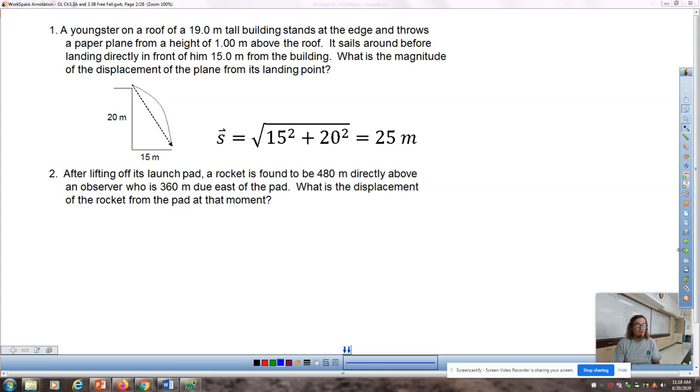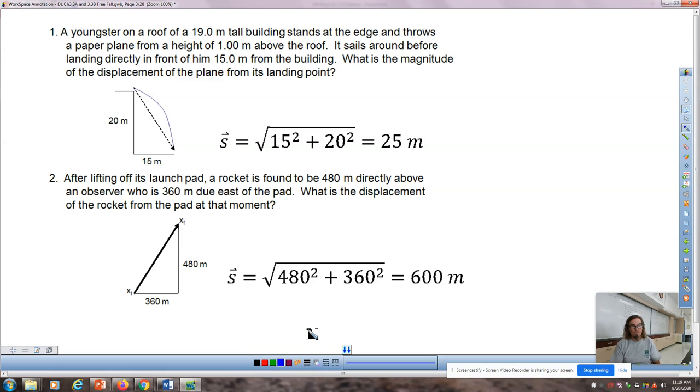Question number two: after lifting off its launch pad, a rocket is found to be 480 meters directly above an observer who is 360 meters due east of the pad. First thing is maybe you draw yourself a little rocket taking off. There's an observer who is 360 meters this way, and the rocket must be doing something like this to be directly above the observer. The displacement is the diagonal, the hypotenuse. Same thing, that is also a 3-4-5 right triangle.